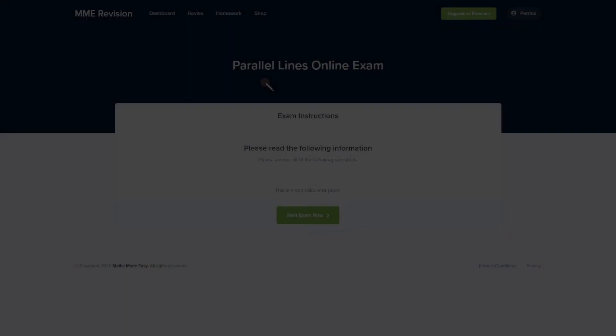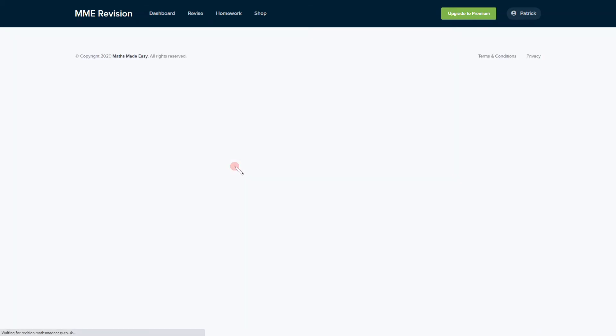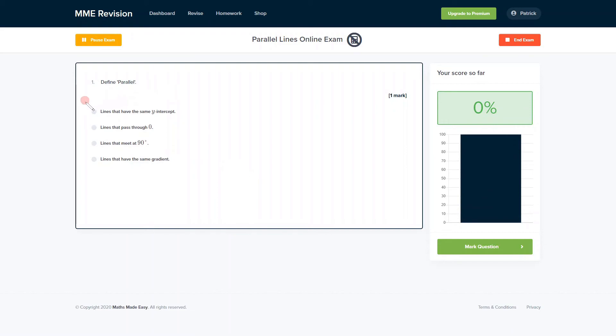If you'd like to get some practice with some parallel and perpendicular line exam style questions, then you can take our online exam now. This is available through our revision platform and you'll find loads of different questions, a variety of question types, and you get instant feedback on each and every one. This is useful if you want to keep track of the areas that you need to improve on. If you're interested, then you can click the link below and it will take you straight there.